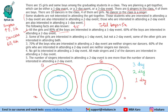Some girls are interested in a one-day event but not a two-day event — exclusively one-day. Some other girls are interested in both. These will be positive integer values in their respective regions. No girl is interested in attending a three-day event, so that value is zero. All 15 girls must be distributed across the one-day and two-day regions only.